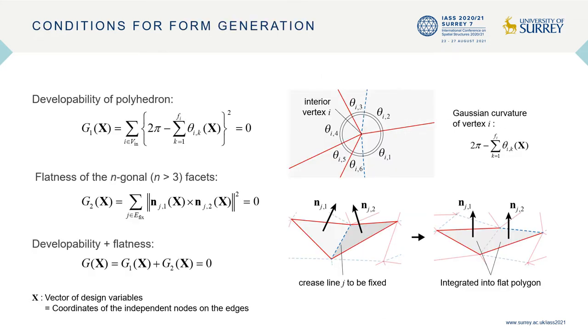From here, the optimization problem for form generation is formulated. When a polyhedron is developed to a plane, the sum of angles between the crease lines around each interior vertex should be equal to 2π. Some crease lines are fixed to reduce the degrees of freedom of mechanism. The pairs of facets connecting to the fixed crease lines are integrated into flat polygons. The unit normal vectors of these facets should be parallel. Therefore, the condition of developability of the polyhedron and the flatness of its facets can be formulated as G(X) equal to 0.